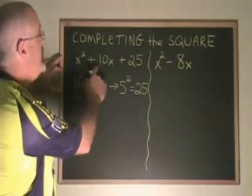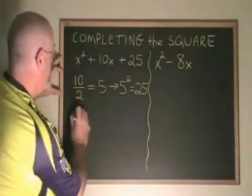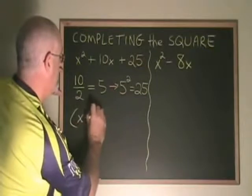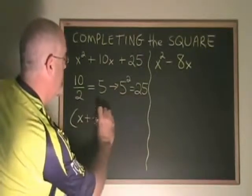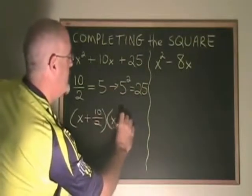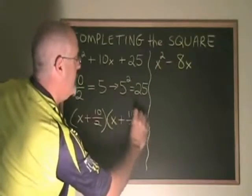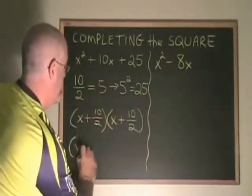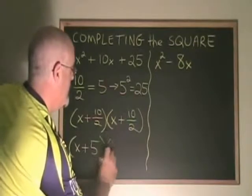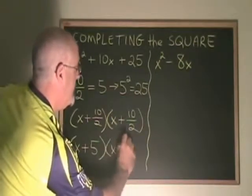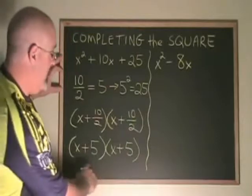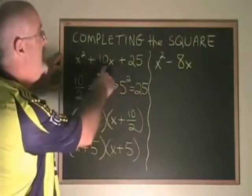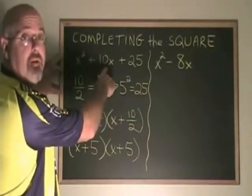That means that the factors of this trinomial should be x plus 10 over 2, x plus 10 over 2. And of course, this simplifies to x plus 5, x plus 5. If we multiply these binomials together, we will indeed get x squared plus 10x plus 25.